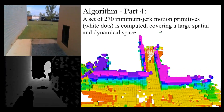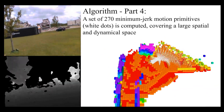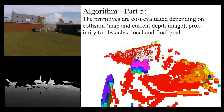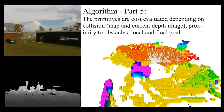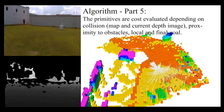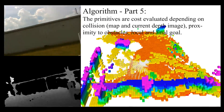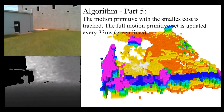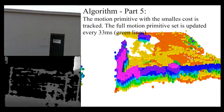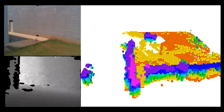A set of 270 minimum jerk motion primitives — see the white dots — is computed, covering a large spatial and dynamical space. The primitives are cost-evaluated depending on collisions in the map and the current depth image, proximity to obstacles, and proximity to the local and final goal. The motion primitive with the smallest cost is tracked. The full motion primitives set is updated every 33 milliseconds — see the green lines.